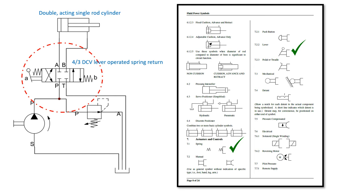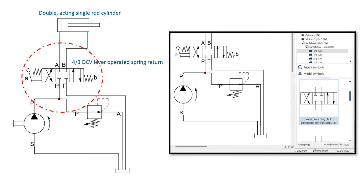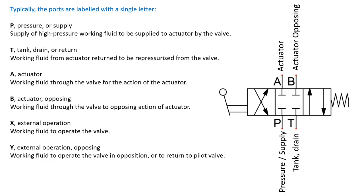Here's an example of how the directional control valve is selected from the Rexroth Scheme Editor software. Typically on a directional control valve, the ports are labeled with a single letter. The labeling is pretty standard, but if there is any variation, refer to the data sheet that came with your specific directional control valve.